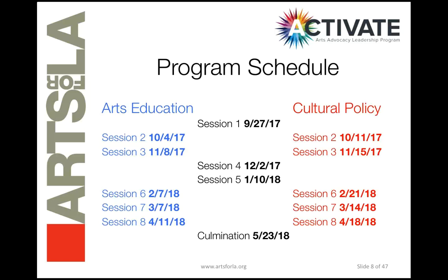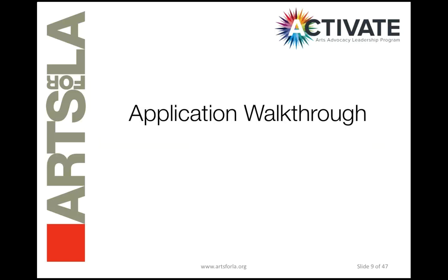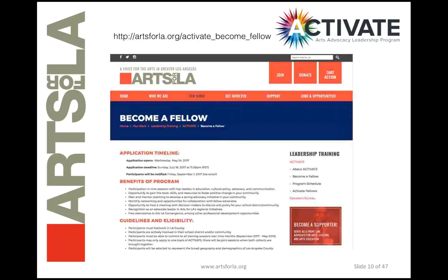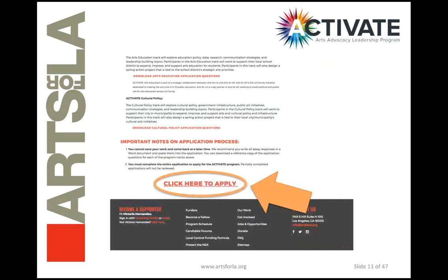So if all that sounds good and you're interested in applying for the program, you can submit your application. It's really important that when you submit your application, all of your information is correct and the application is complete, because we can't piece together different submissions. We won't review any applications that are not complete from start to finish. The first step is going to our Become a Fellow website. Here you can find all kinds of information about the program itself, including the application timeline, benefits of the program, guidelines and eligibility, and information about the different program tracks.